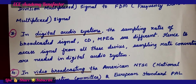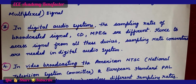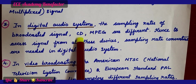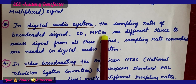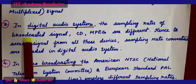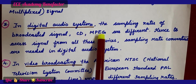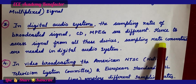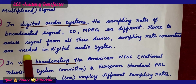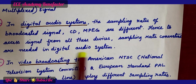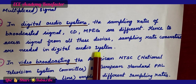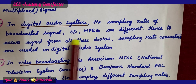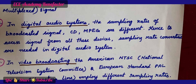The third application is in digital audio systems. The sampling rates of broadcasted signals, CD (compact disc), and MPEG signals are different. Hence, to access signals from all these devices, sampling rate converters are needed. In a digital audio system, we may be using a broadcasted signal, CD, or MPEG, so we need sampling rate converters.